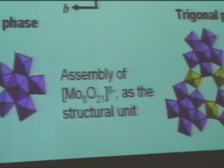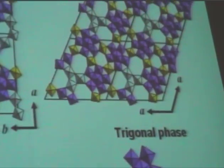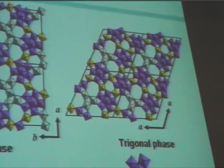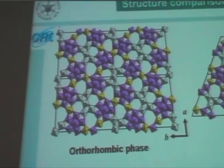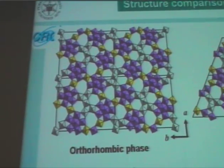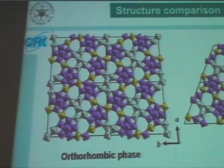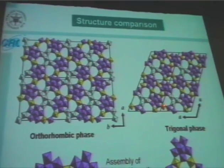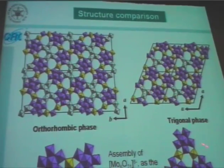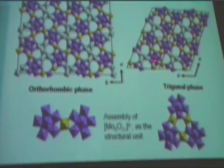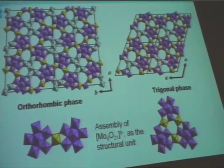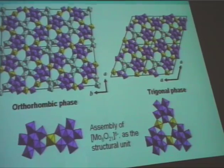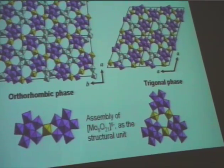The octahedral molybdenum material is constructed with this unit. It is stacked together to form this layer, and it goes in the stacking direction to be the three-dimensional material. In this case, these layers cooperate together to form the structure.